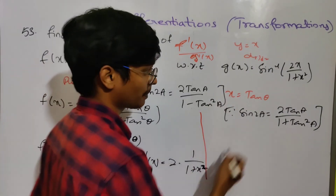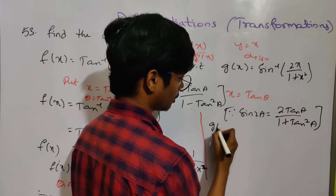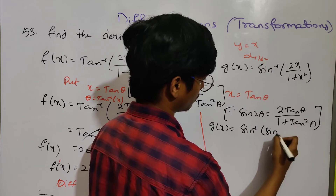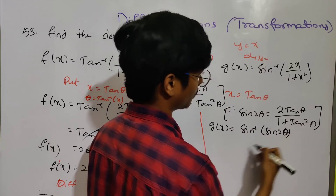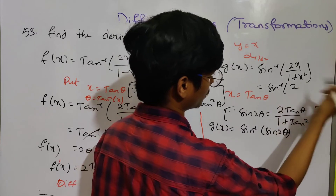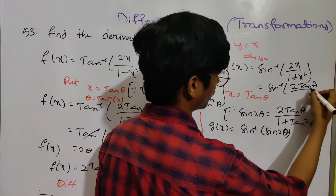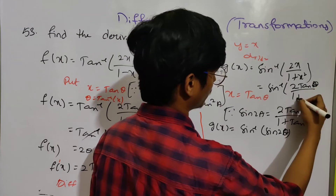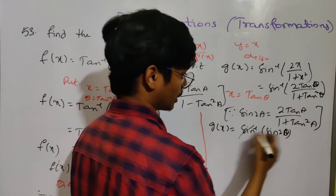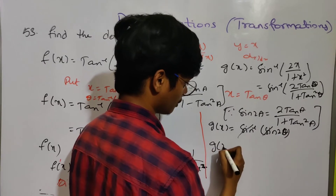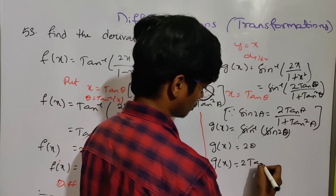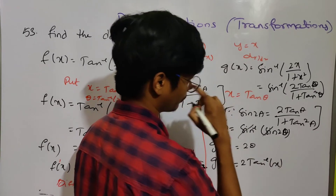Now g(x). g(x) equals sin inverse of sin 2θ, which simplifies to sin inverse of 2 tan θ by 1 plus tan squared θ. Sin and sin inverse cancel, giving g(x) equals 2θ, so g(x) equals 2 tan⁻¹x.